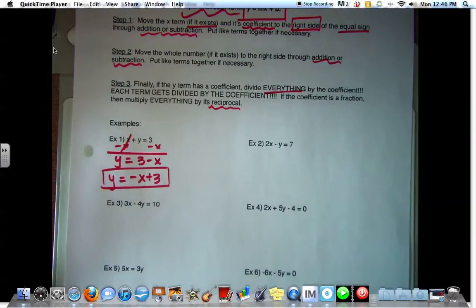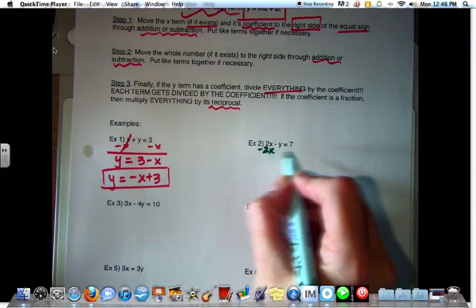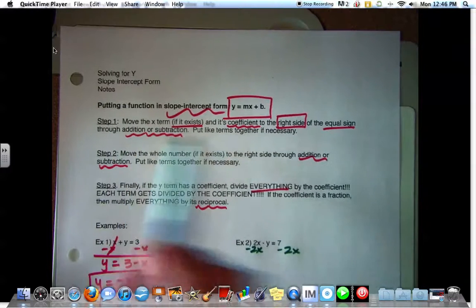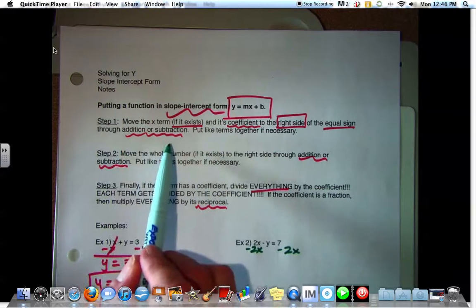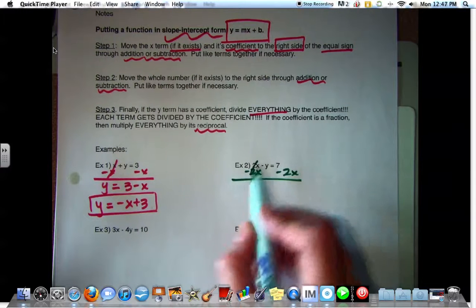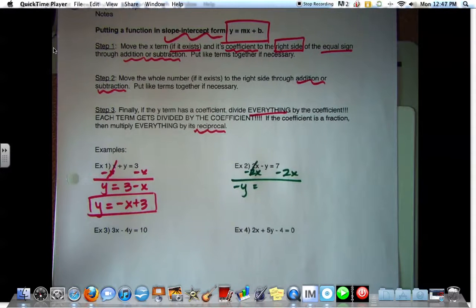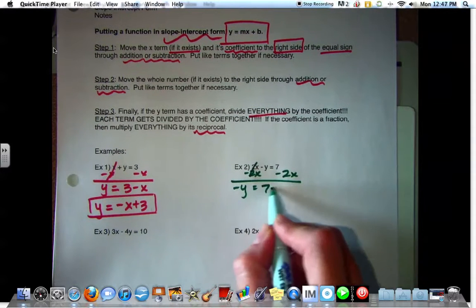Example two. We have two X minus Y equals seven. Subtract two X. So what do I have remaining on the left-hand side? Negative Y. Very nice. Negative Y equals seven minus two X.